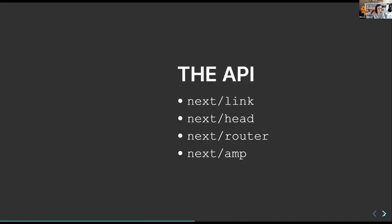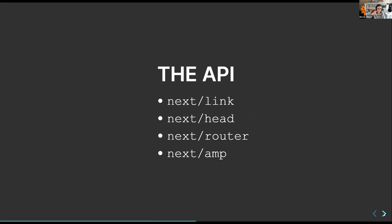The Next.js API has four main ones people use most. Next/link is a glorified anchor tag that wraps links for client-side transitions with preloading — super fast. Next/head is a React component for the HTML head, letting you programmatically change your title or meta tags. Next/router is a React hook for getting query parameters, the current path, redirects, and navigation. And Next/amp lets you generate Google AMP pages — the Google team worked with the Next.js team on that.